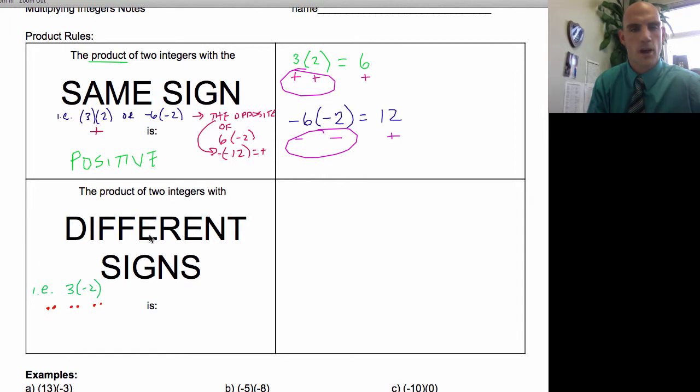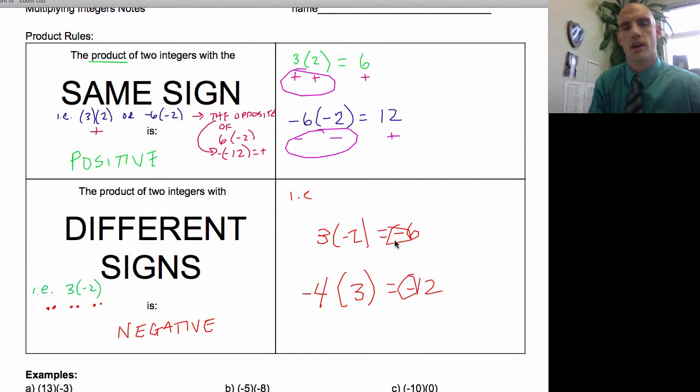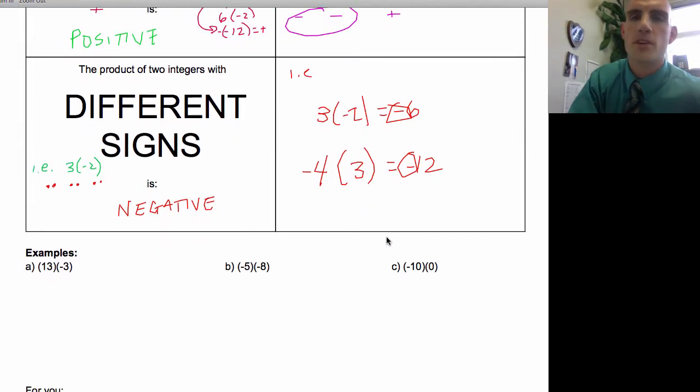So the product of two integers with different signs is negative. For example, three times negative two equals negative six, or like negative four times three. So three groups of negative four equals negative 12. Always negative with the different signs. It's pretty simple.